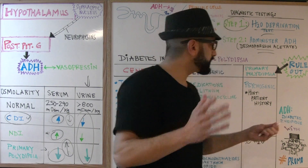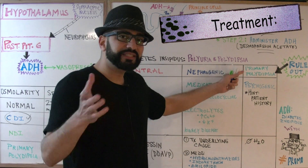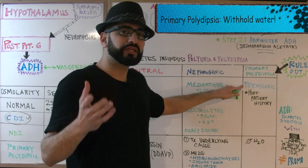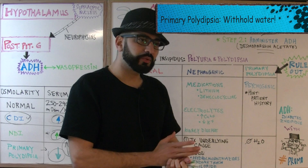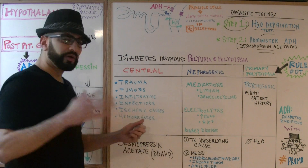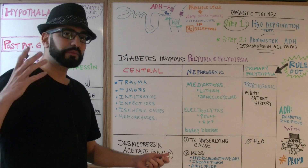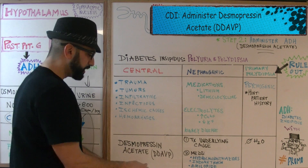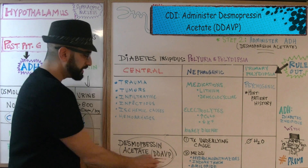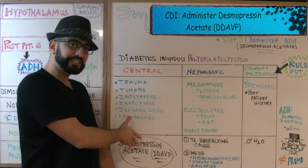Now we need to treat all three cases. For primary polydipsia, since there's an underlying psychogenic cause, all we do is tell the patient not to drink excessive water. For central diabetes insipidus, since those causes prevent ADH from being released from the brain, we continue giving the patient desmopressin acetate, abbreviated DDAVP. You can give it orally, intranasally, or by injection.